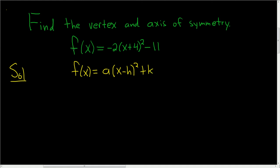So if we want to write our parabola in standard form, we can think of it as negative 2, x minus negative 4, square the whole thing, then plus negative 11.